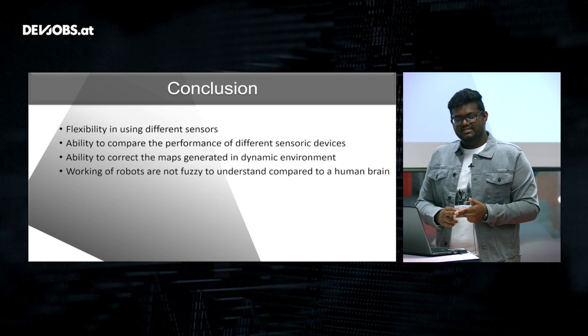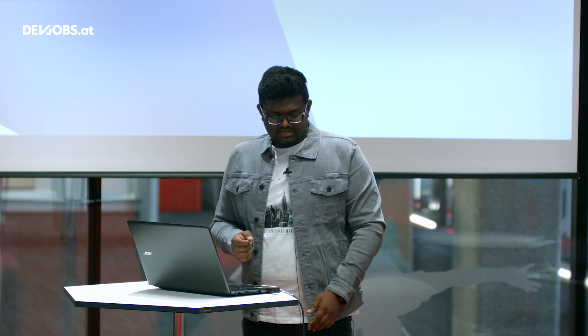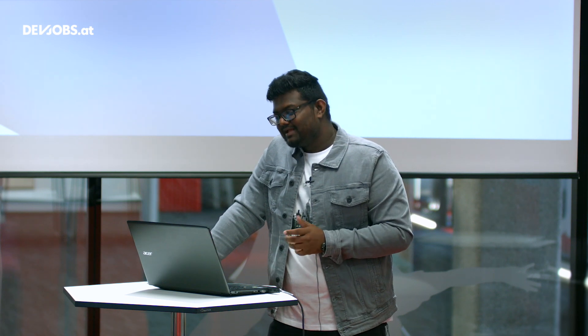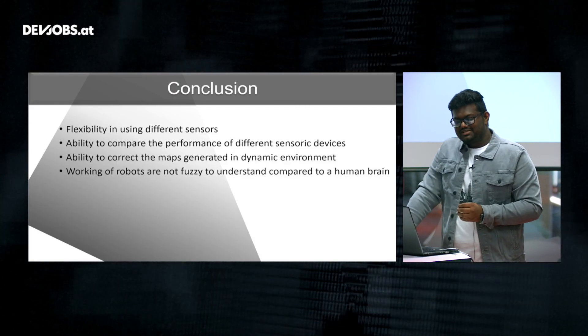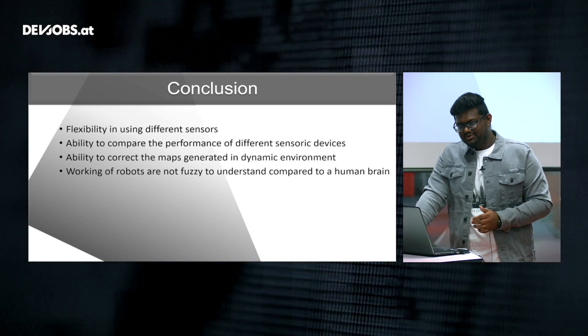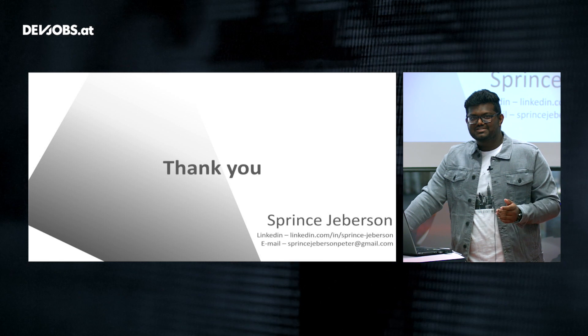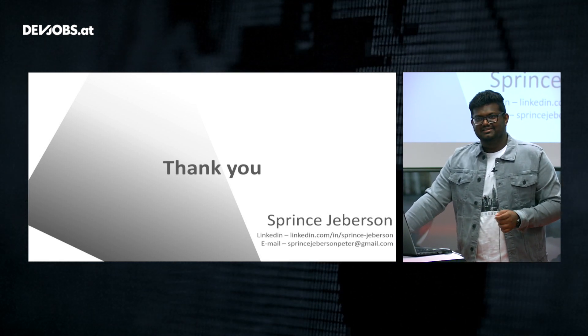Another key advantage is its ability to correct maps in dynamic environments. If a robot maps the environment now it would consider me an obstacle, but tomorrow when I'm gone, the robot knows this was a temporary obstacle and removes me from the map. The working of the robot is straightforward once you understand the logic behind it, and it's simple compared to the human brain. Thank you very much for your time — this is Prince Jebberson signing off. Feel free to email me or contact me on LinkedIn.